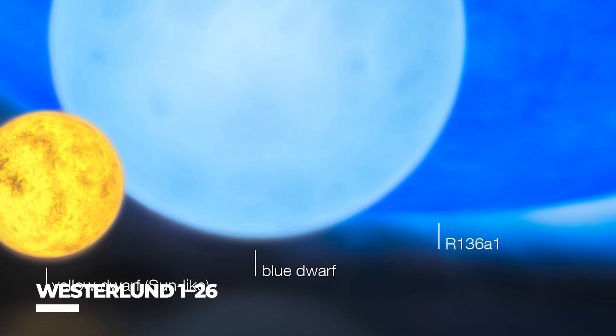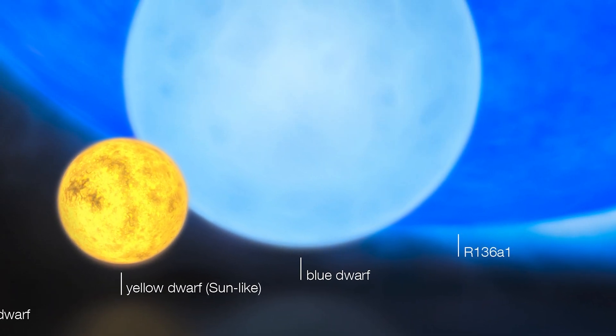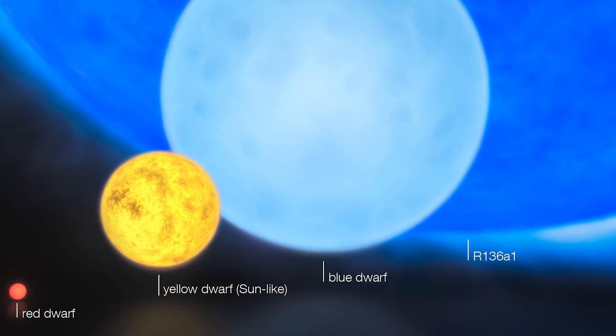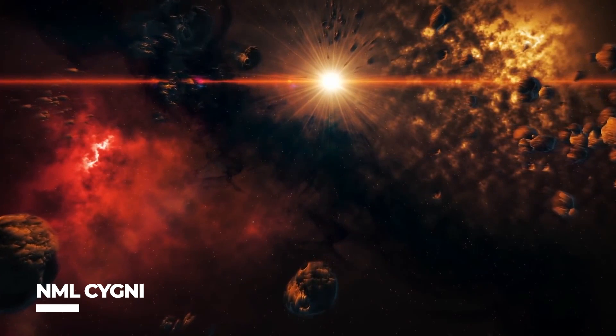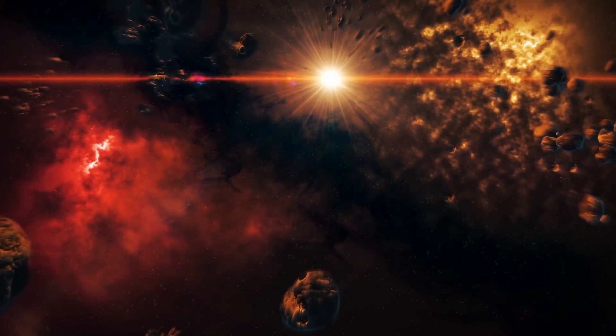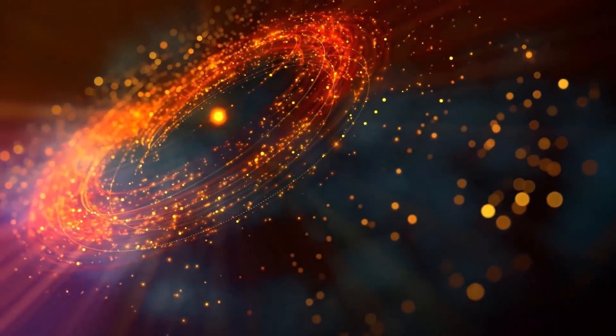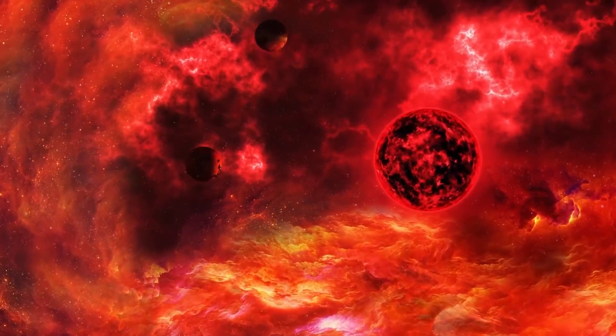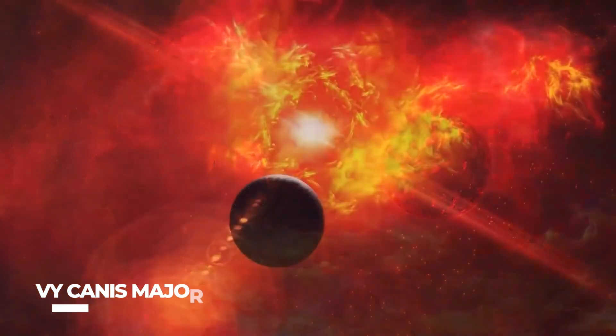According to NASA, Westerlund 1-26 is more than 1,500 times wider than the sun. According to a 2012 article published in the journal Astronomy and Astrophysics, NML Cygni is 1,639 times wider than the sun. According to a 2020 article in the journal Astrophysics of Galaxies, KY Cygni is over 1,033 times wider than the sun.